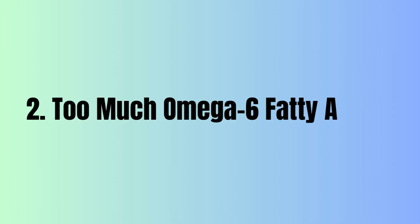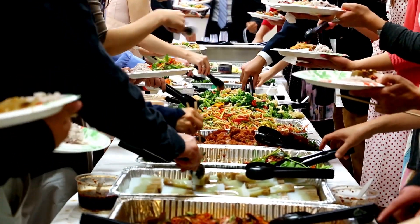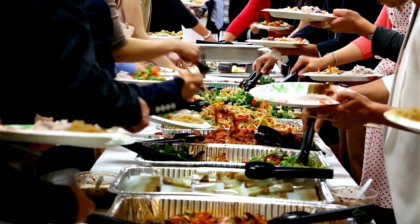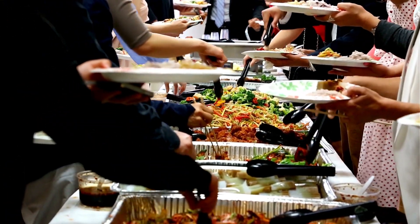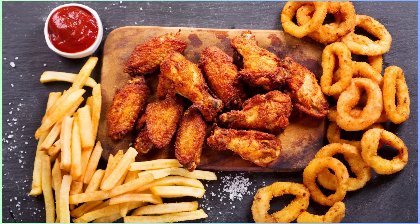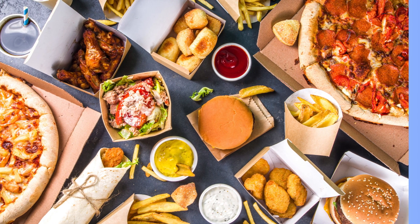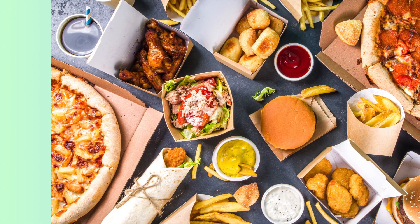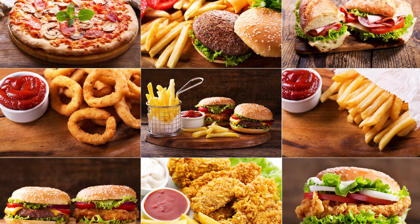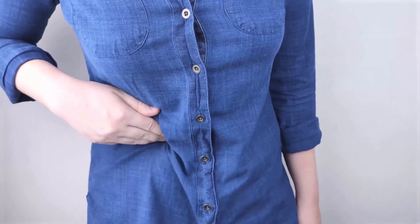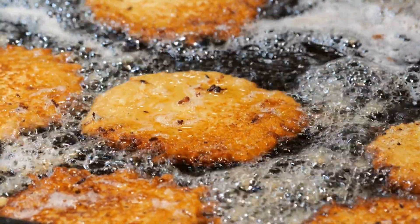The second cause of fatty liver disease is eating too much oil high in omega-6 fatty acids. Foods and products high in omega-6 fatty acids are widespread, especially among processed, fried, and fast foods, due to the types of oils used in their preparation. Eating excessive amounts of omega-6 polyunsaturated fatty acids leads to the development of non-alcoholic fatty liver disease. Many commercial chips and snacks are cooked in oils like corn oil or sunflower oil, which are high in omega-6.